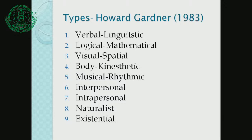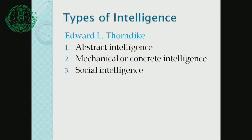So here we complete the different types of intelligence. Based on Edward L. Thorndike there are three types: abstract, mechanical, and social. Based on Howard Gardner there are nine types of intelligence.